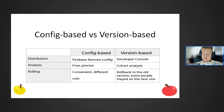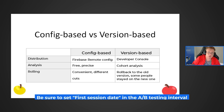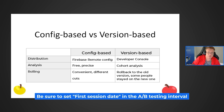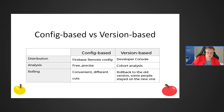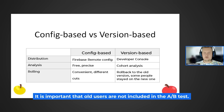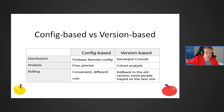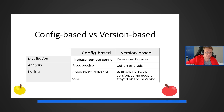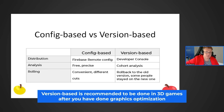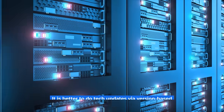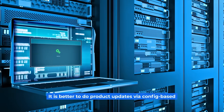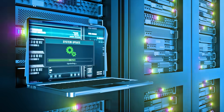Analyzing version-based A-B testing is more complicated because people will be moving between cohorts. Be sure to set the first session date in Firebase for A-B testing — if you don't, the test will show you noise, not results. Ensure old users don't end up in the A-B test. The only reasonable use of version-based testing is when testing different mediation versions due to difficulties with remote config. Version-based testing is recommended for tech updates in 3D games after graphics optimization; use config-based for product updates. Never mix the two.